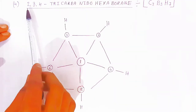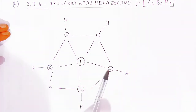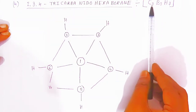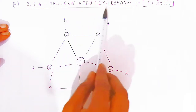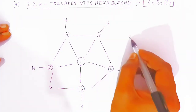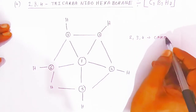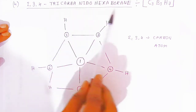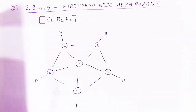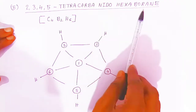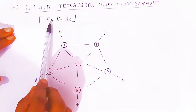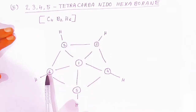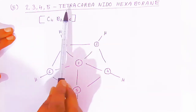One more type is 2,3,4-Tricarbon nido hexaboron, where at positions 2, 3, and 4 there are three carbon atoms, giving a total of three carbon plus three boron — hence hexaboron. The formula is C3B3H7. Additionally, the 2,3,4,5-Tetracarbon nido hexaboron has 4 carbon, 2 boron, and 6 hydrogen, formula C4B2H6, with carbons at positions 2, 3, 4, and 5 and boron at positions 1 and 6.